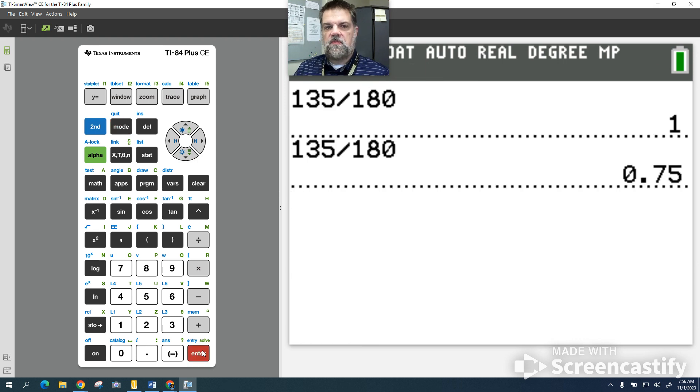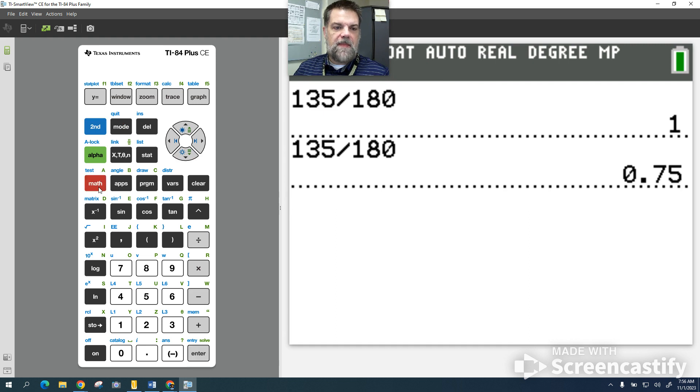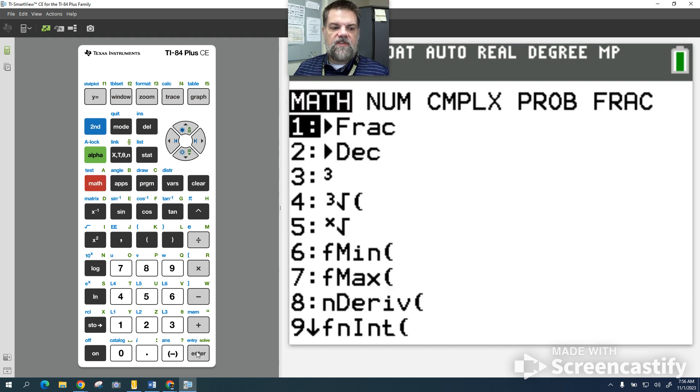So it's 3 fourths is what it reduces down to, right? And if you're ever wondering, if you're using the older calculators, you could convert that to a fraction. That's not that hard to do. If you go to math, see this thing where it says convert to a fraction? If I hit that, it's going to take my answer, which is 0.75, and then convert it to a fraction.